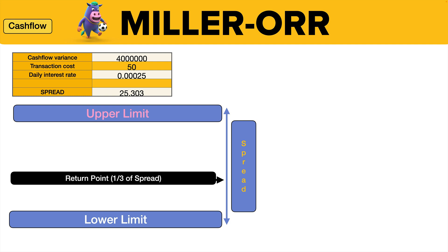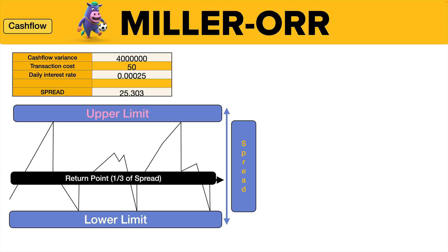So the cash balance goes up, and when we have too much money we put some on deposit — enough to bring us back to the return point. When we're at the lower limit, we get money out of deposit — enough to get us to the return point. If cash flows go down and we haven't got enough, we get money from the deposit account — enough to get us to the return point. You're always trying to get back to that return point.